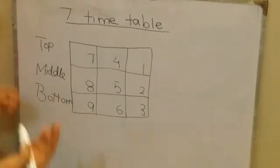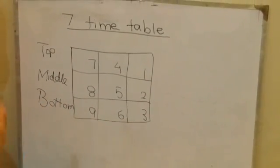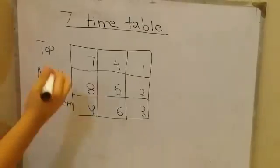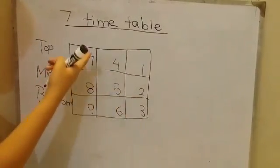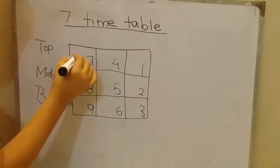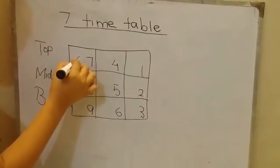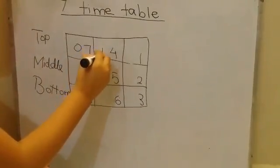So now we are going to write counting from 0 to 6 in the top boxes: 0, 1, 2.